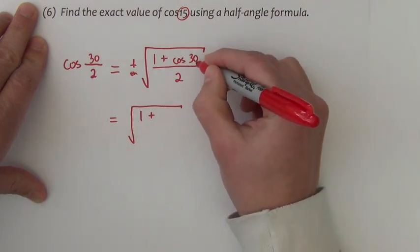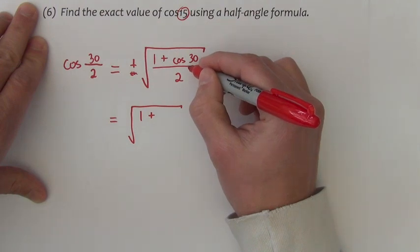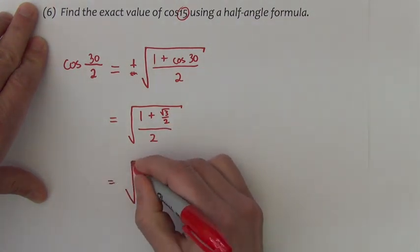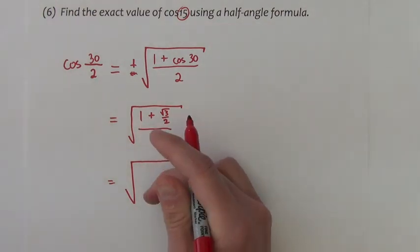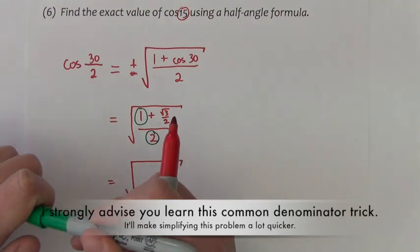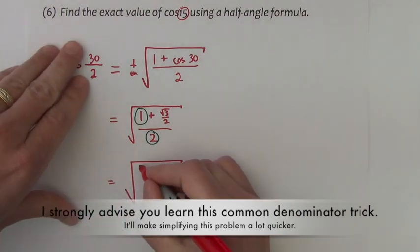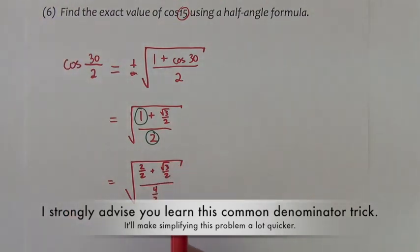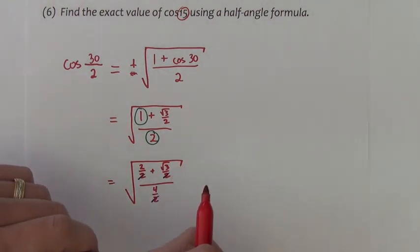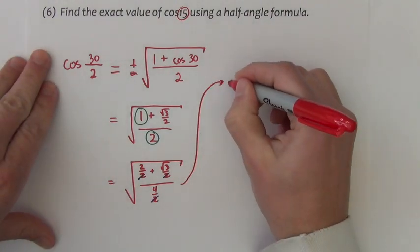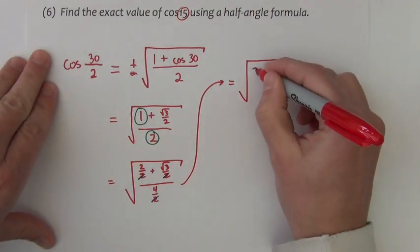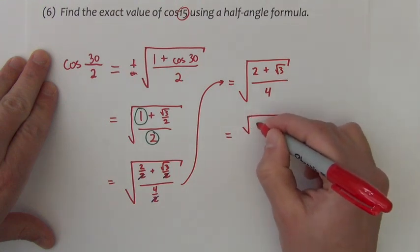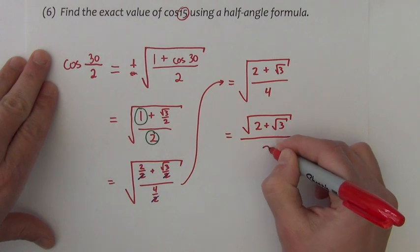We have 1 plus, I need to know what the cosine of 30 degrees is. The cosine of 30 degrees is square root of 3 over 2, and it's over 2. I'm going to change all the terms into fractions over 2. I make it 2 over 2 plus square root of 3 over 2 divided by 4 over 2. That allows me to take all these common denominators of 2 and wipe them out. We now have square root of 2 plus square root of 3 over 4, which becomes the square root of 2 plus square root of 3 over 2.